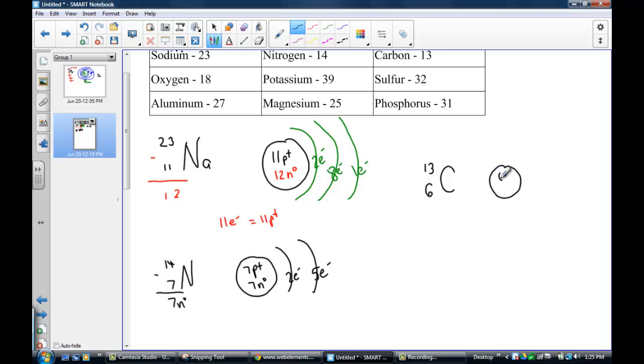So real simple, six positive protons in the nucleus. 13 minus six is seven neutral neutrons. And to arrange the six electrons, we'd place two in the first. We only need a total of six, so four more in the next energy level.